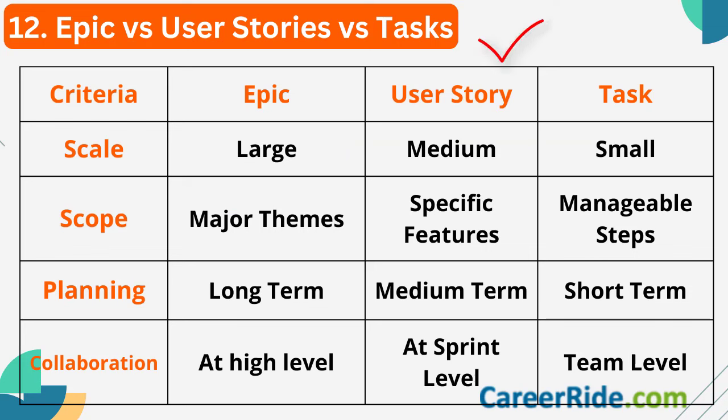Referring to a comparison table, we can differentiate between the three based on various criteria. In terms of scale and scope: Epic is large in scale, while user stories and tasks are moderate and small comparatively. An Epic is about major themes; user stories are about specific steps to implement that Epic; and tasks are about actual steps to take. The timeline for planning is different for all three. Collaboration in Epic is at the higher organizational level, user stories at the sprint level, and tasks at the team level.